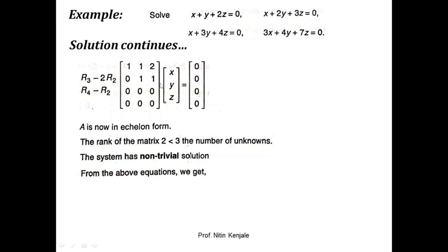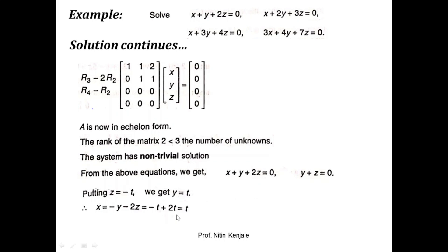From the row echelon form we get the equations: y + z = 0 and x + y + 2z = 0. We put z = -t, so y = t. Substituting y = t and z = -t into the first equation gives x = t. Therefore, the solution to this system is (t, t, -t). You can substitute any value for t to get a new solution, giving infinitely many solutions.